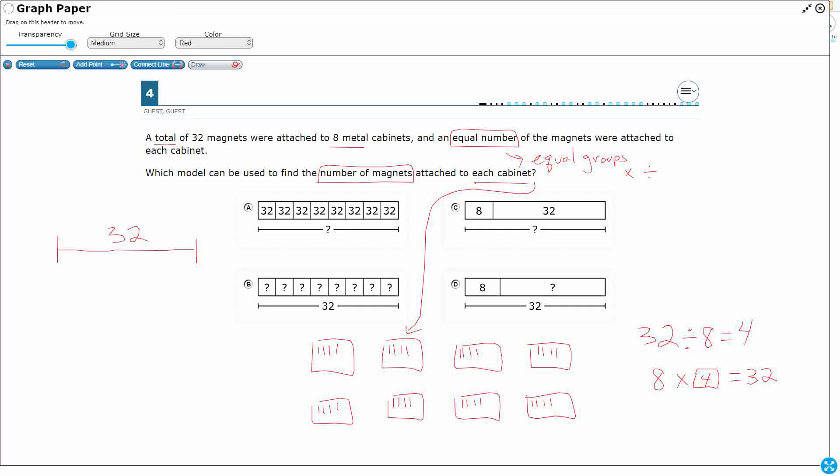So one thing that we can do here is we can say, I've got four. Which model is going to be used to find the number of magnets attached to each cabinet? How many magnets do I have on each cabinet? Four. So, what happens if I just put a four for each question mark? Well, how's that going to work for A? That's eight times 32 is what that is. That's showing me there's eight groups of 32 and that's going to equal 256, not four.